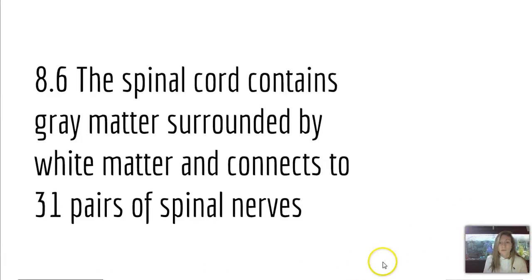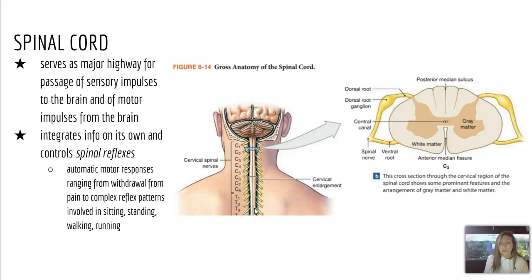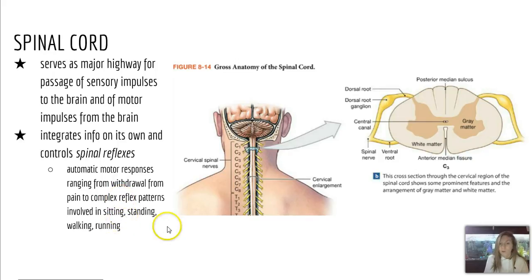Moving on to 8.6: the spinal cord contains gray matter surrounded by white matter and connects to 31 pairs of spinal nerves. The spinal cord serves as a major highway for the passage of sensory impulses to the brain and motor impulses from the brain. It integrates information on its own and controls spinal reflexes — automatic motor responses ranging from withdrawal from pain to complex reflex patterns such as sitting, standing, walking, and running.